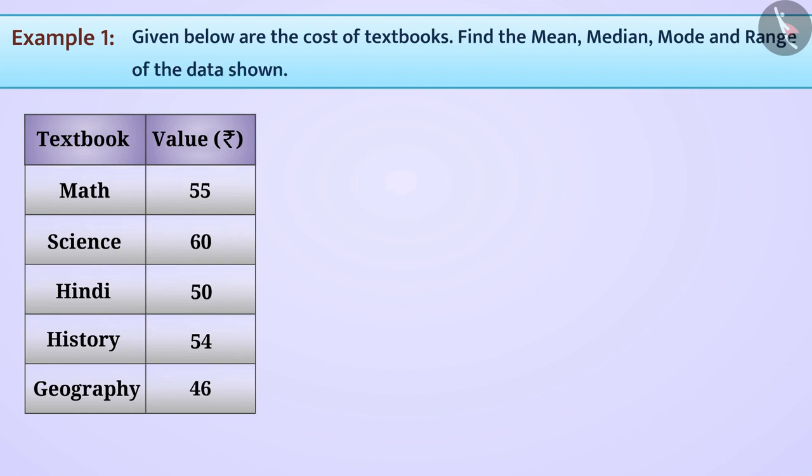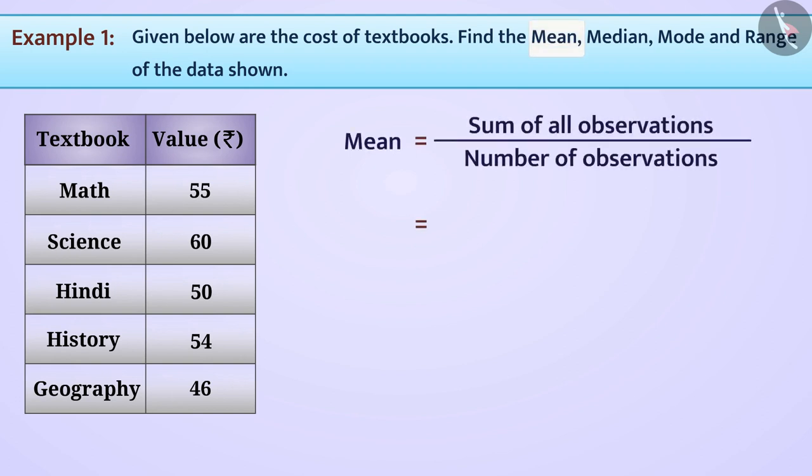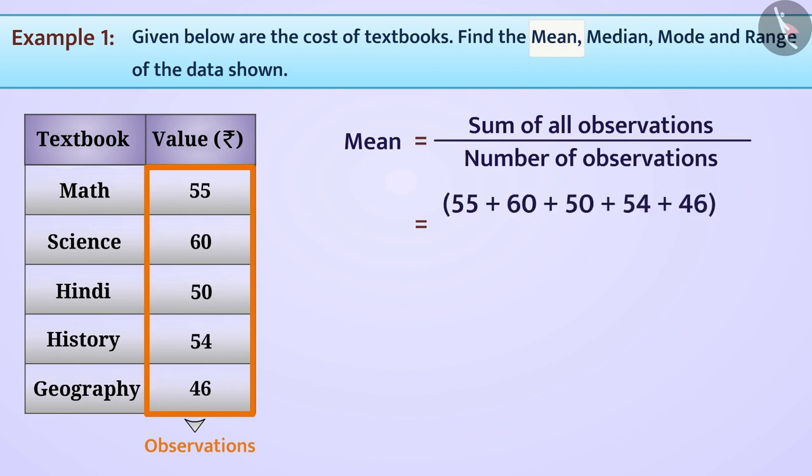We all know mean is equal to sum of all observations divided by number of observations. Using this formula, we can derive the mean of the values given in the table.